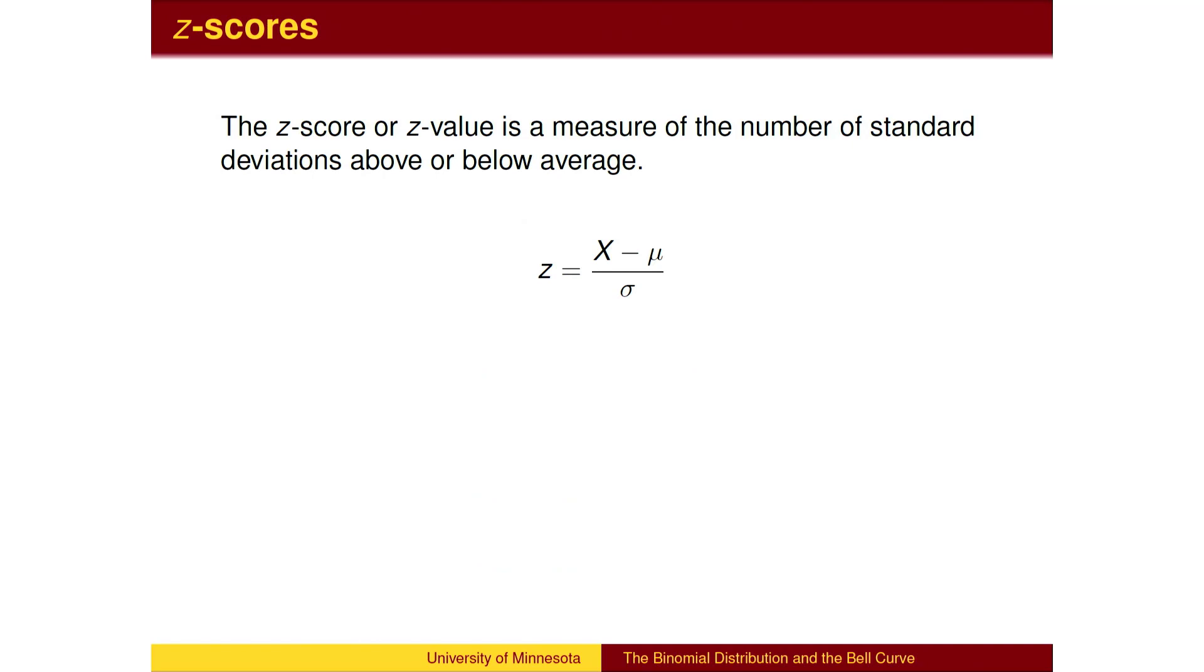These values come from the standard bell curve, also called the standard normal distribution. The standard normal distribution has a mean of zero and a standard deviation of one, so that the value being looked up is the number of standard deviations above the mean.